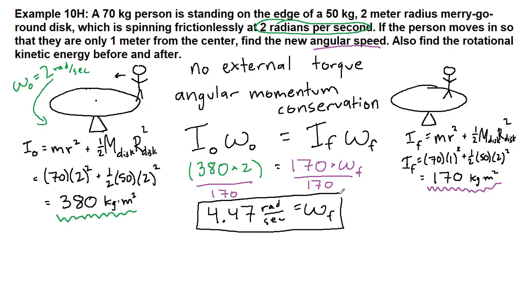It should make sense to us that this sped up. As the person gets closer and closer they are making the moment of inertia smaller, which means it's easier for that merry-go-round to be rotating. It will speed up in order to keep the angular momentum conservation the same.